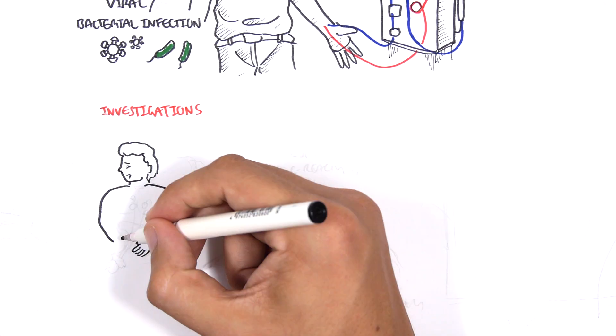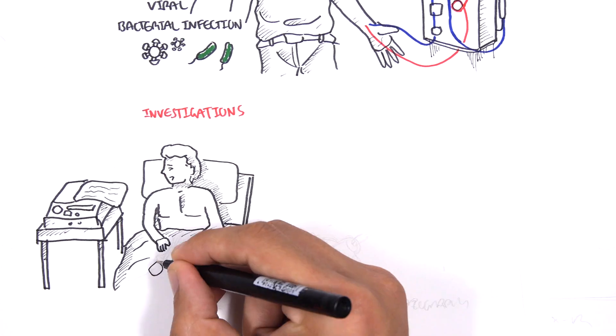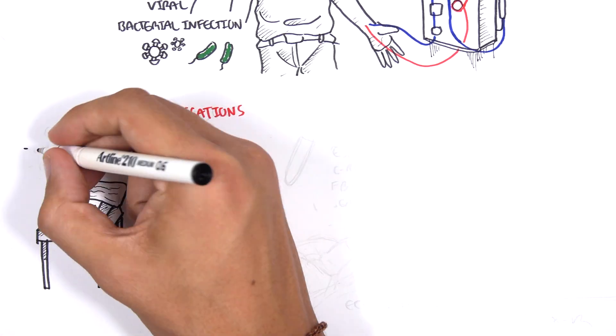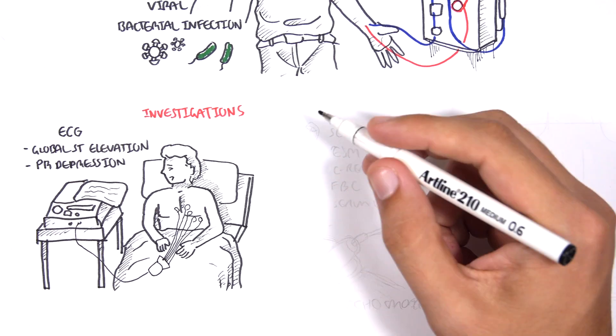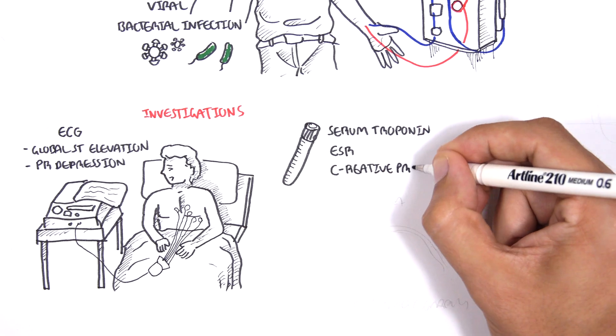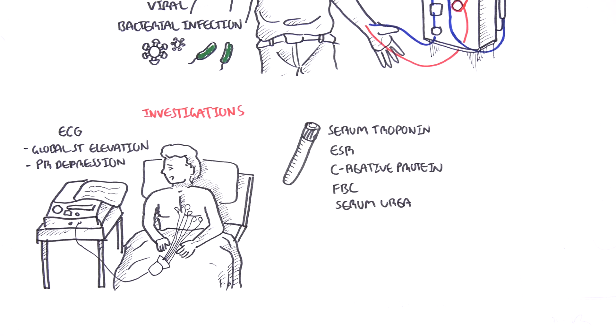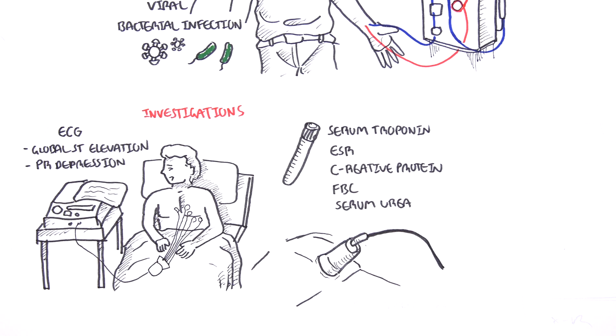Investigations for suspected pericarditis include ECG, which may show global ST elevation and PR segment depression, serum troponin, ESR, C-reactive protein, full blood count, and serum urea. An echocardiogram is important in ruling out differentials and checking for pericardial effusion and pericardial damage.